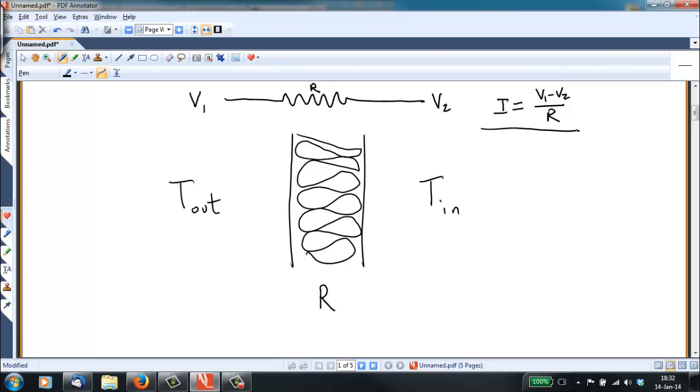Exactly analogously in heat transfer, we can say that the heat flowing through the wall here, Q is equal to T_out minus T_in divided by the resistance of the wall, of the insulation.